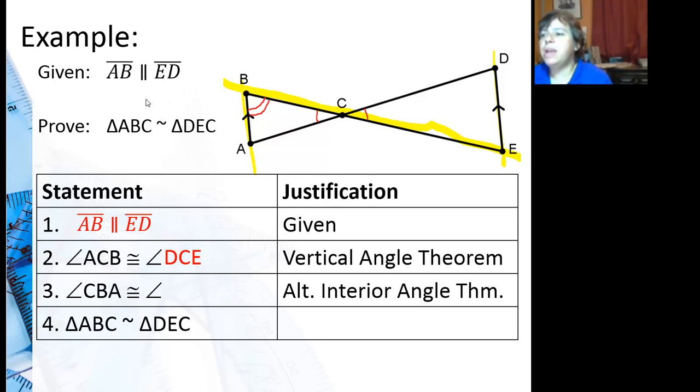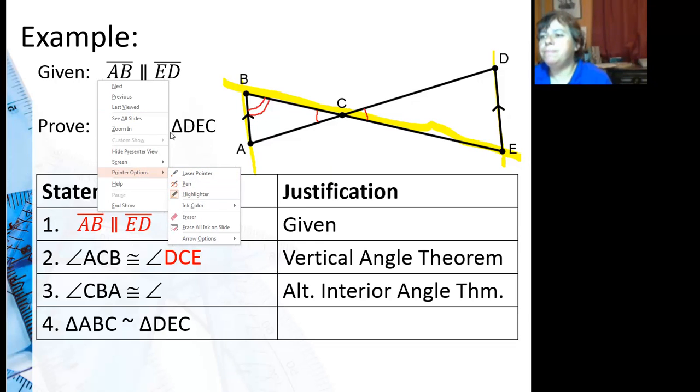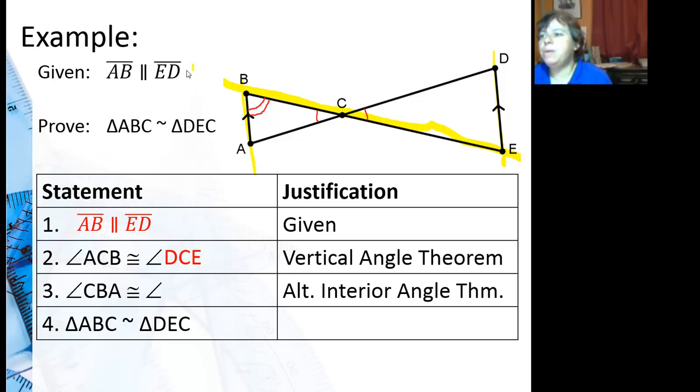And you can see my transversal. The alternate interior angle to that would basically be, hold on, there we go, would basically be that one. And which means that's angle CED. E is the vertex right there, so that's your angle.